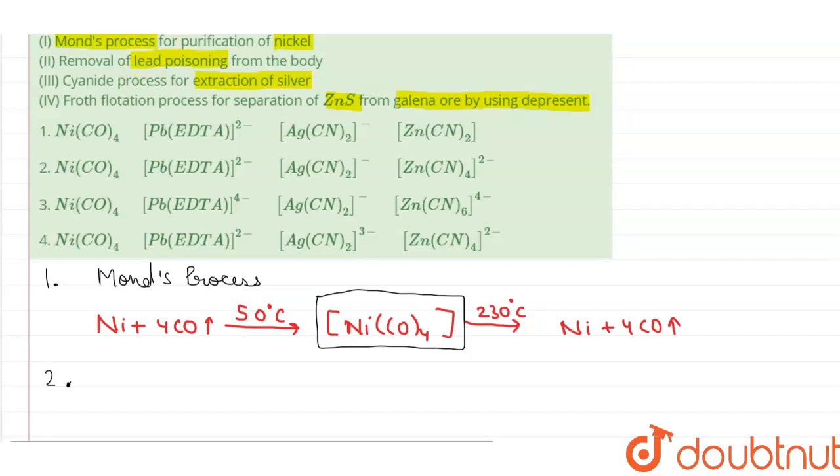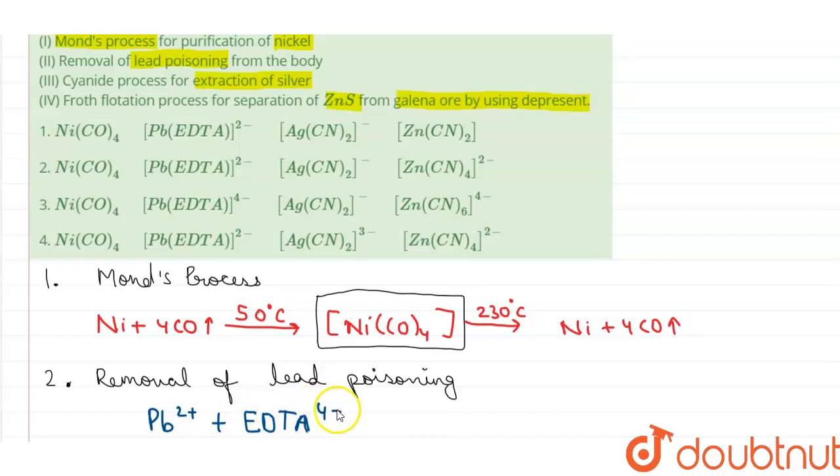Moving on to the second reaction, lead poisoning. Removal of lead poisoning, so the reaction involved in it is lead reacts with EDTA amine, that is ethylene diamine tetra amine minus four.